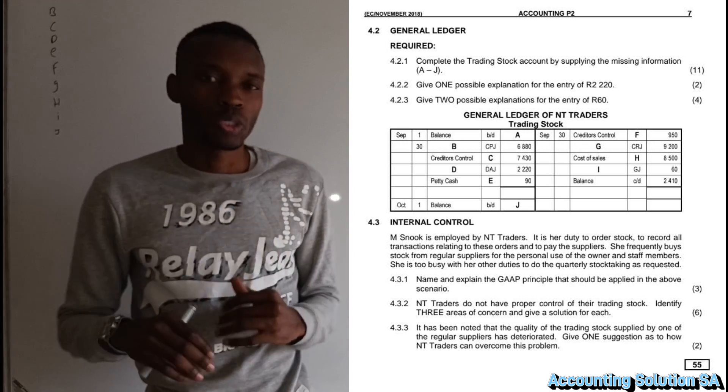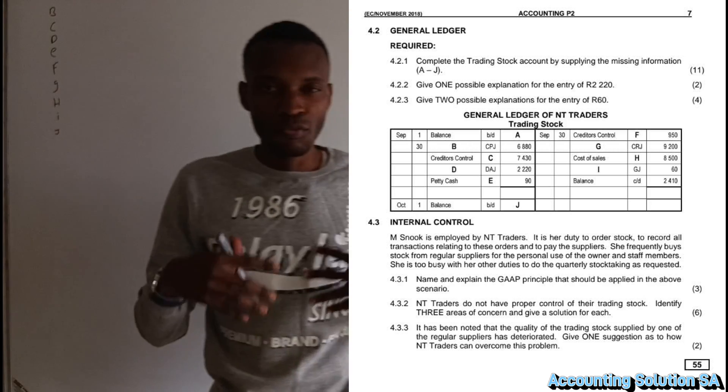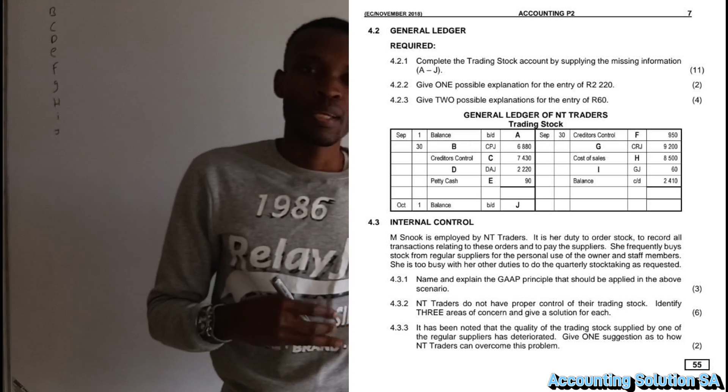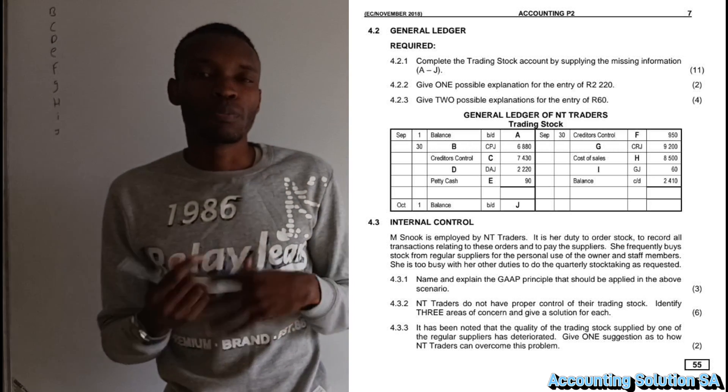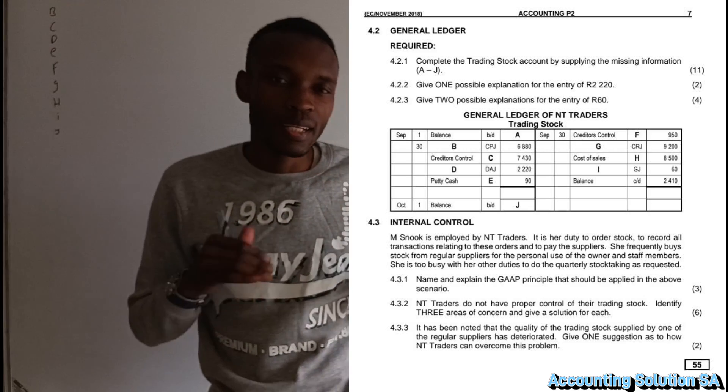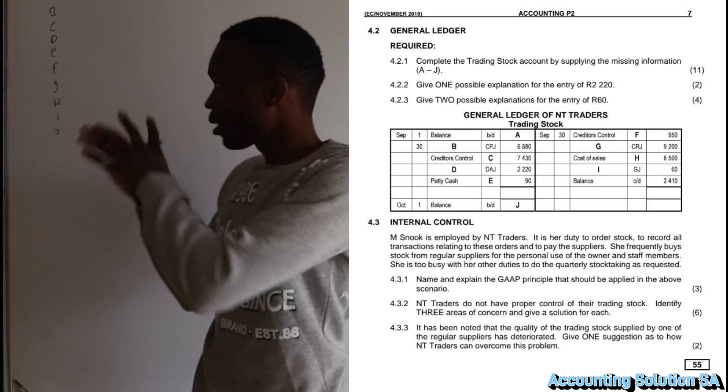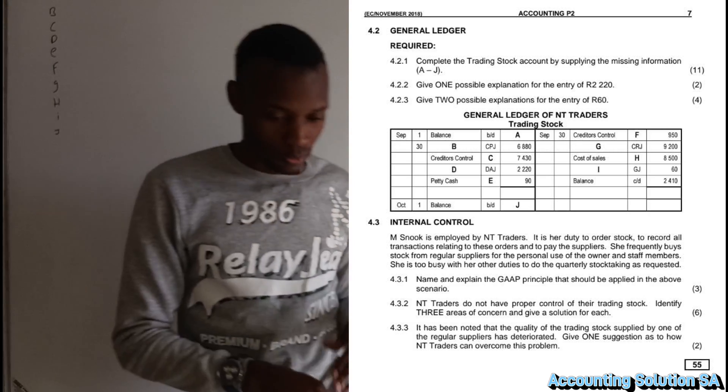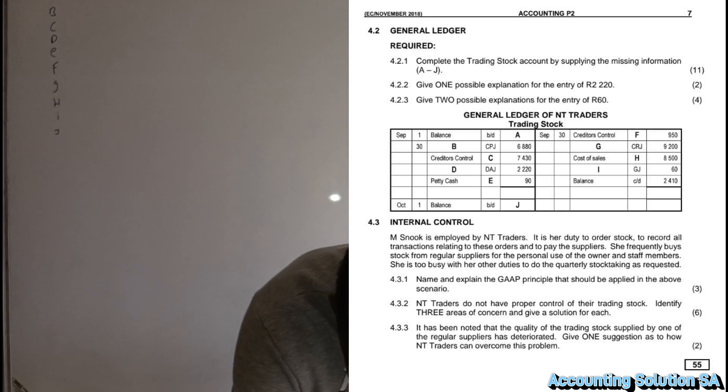This is the only information unfortunately that we are going to use, which means that you have to make sure that you know the format of the trading stock account because you are not going to read any additional transactions to answer one of these questions. Then number A, you can see that it's under balance. It's under a balance of balance brought down, actually it's opening balance.